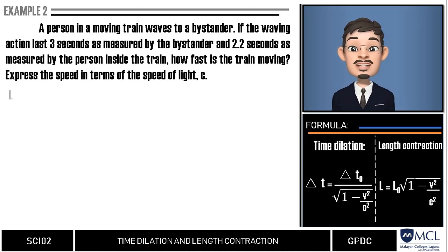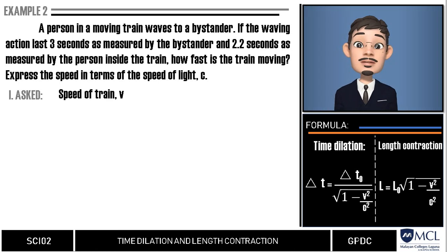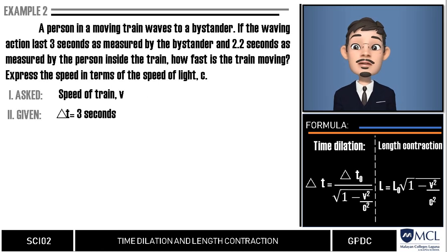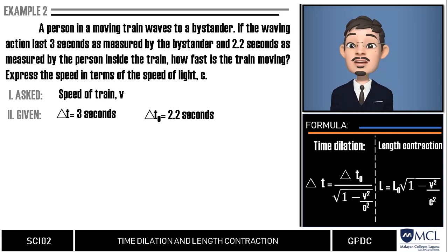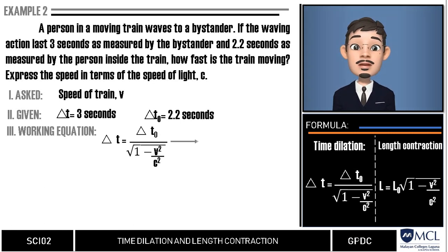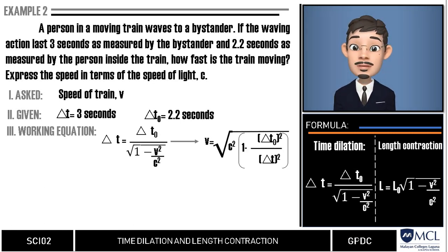First, we can identify what is asked as the speed of the train v. Then, we list down our given. Delta t is 3.0 seconds and delta t sub 0 is 2.2 seconds. We are looking for v and this formula can be algebraically manipulated as v is equal to the square root of c squared times 1 minus delta t sub 0 squared over delta t squared.